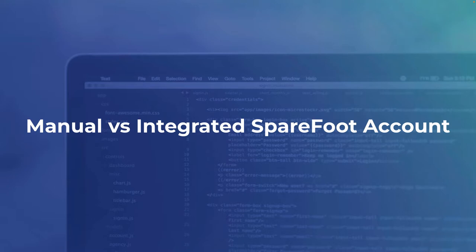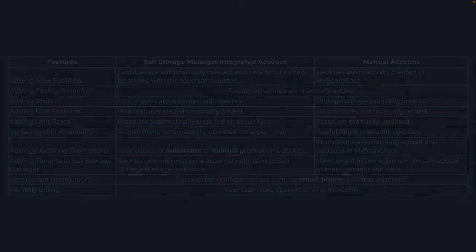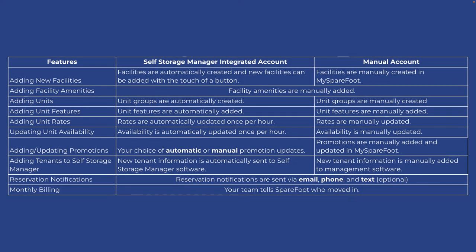There are key differences between having a manual account and an integrated account. With a manual account, facilities, amenities, unit groups, unit features, rates, availability, promotions, new tenants, and reconciliation were all a manual process to maintain in your account.